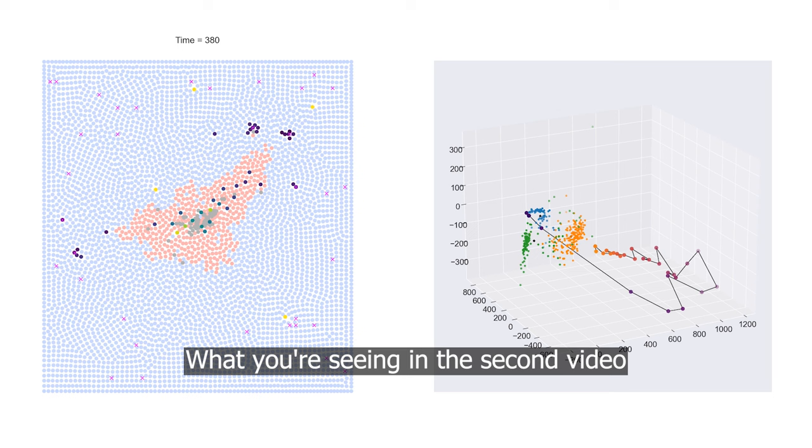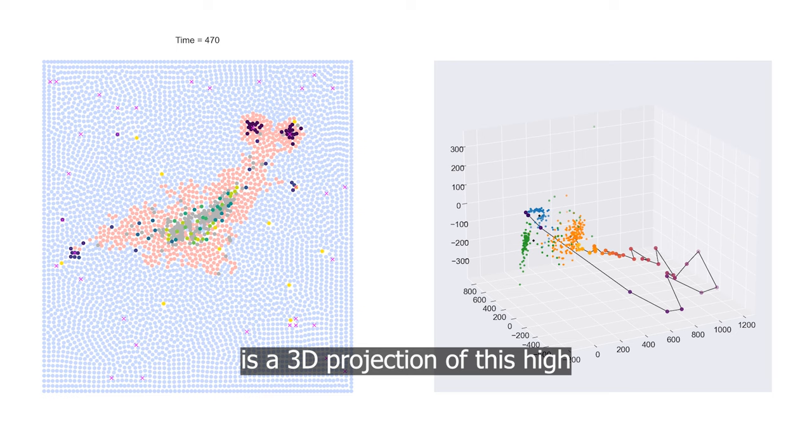What you're seeing in the second video is a 3D projection of this high dimensional statistical space.